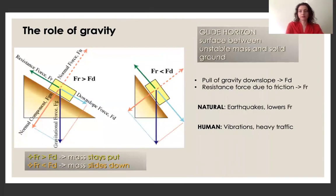For landslides, really, no matter what the type, the role of gravity is important to understand. So here we can see two slopes with two different masses. But we want to focus on the downward force, the downslope force, which is the pull of gravity, which is shown as Fd, and also the resistance force to friction, which is Fr.